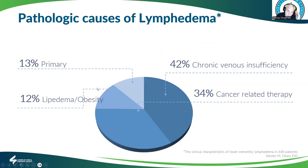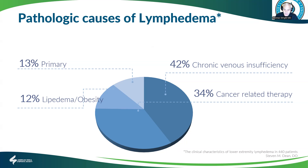So the causes of lymphedema: Dr. Dean at OSU did a study looking at causes among patients who presented with lymphedema to his clinic. About 13% were primary lymphedema, but the most common cause was actually chronic venous insufficiency, then cancer-related treatment was the second most common, and obesity or lipedema was the fourth most common cause of lymphedema presenting to the clinic.